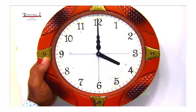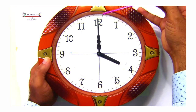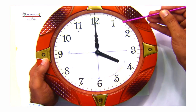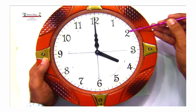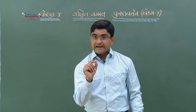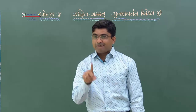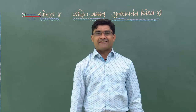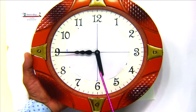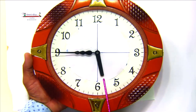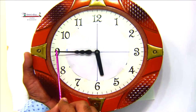આપણે બે અંકની વચ્ચે પાંચ કાપા છે એ શીખ્યા. હવે જો એક અને બેની વચ્ચે - સાનાની ઘડિયાળમાં મિનિટ કાંટો બે પર હતો, એટલે બે ગુણ્યા પાંચ બરાબર 10 મિનિટ - 5 કલાક ને 15 મિનિટ.